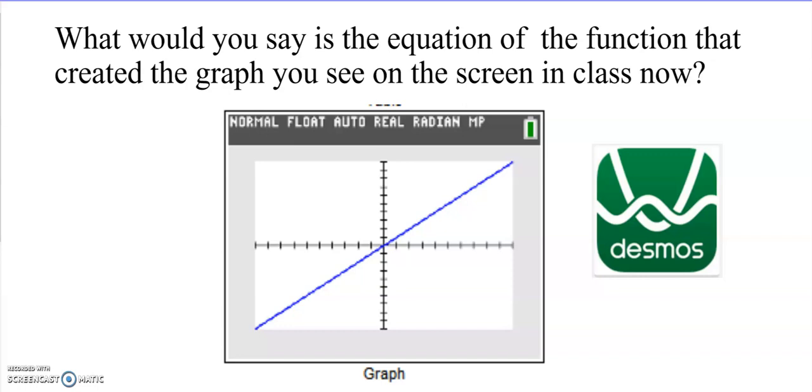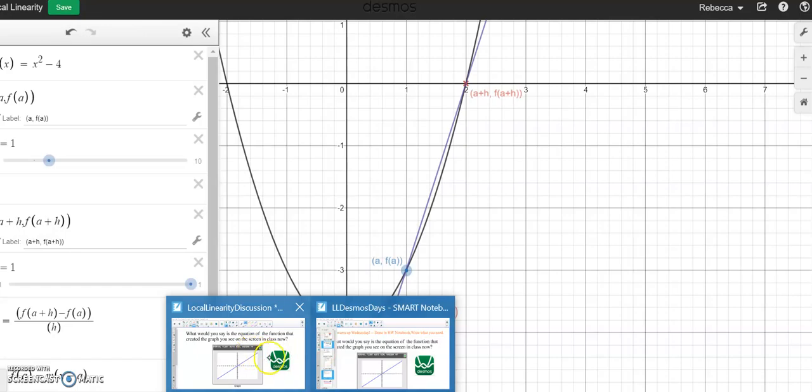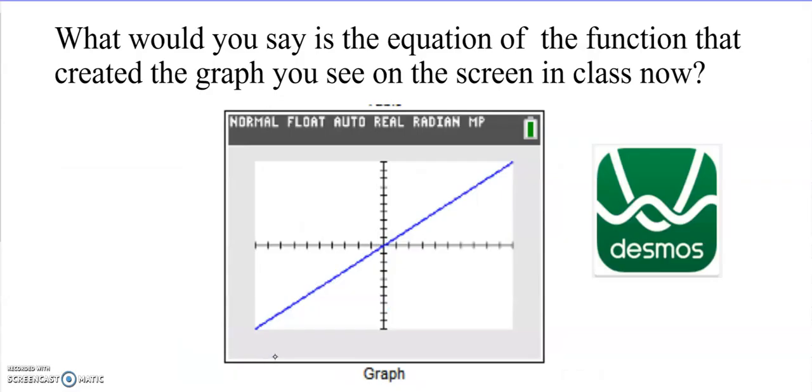All right, so after completing your Desmos activity on local linearity that hopefully left you with something looking like this all set up, I want to do a little summary of really what is the purpose of local linearity, what does it tell us, how do we use our graphs to investigate some things in calculus. So we talked as a class that this graph right here, while it might look like y equals x, we decided that it actually was just us zoomed in really close on y equals sine of x on a close interval near zero.